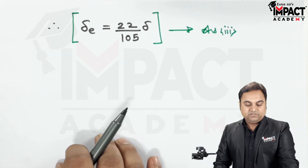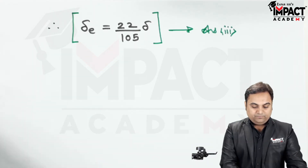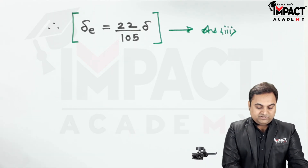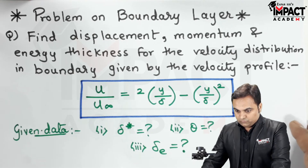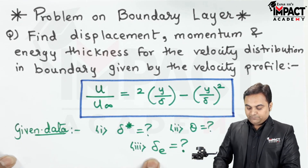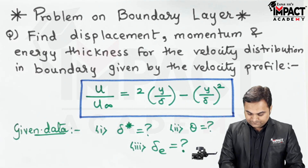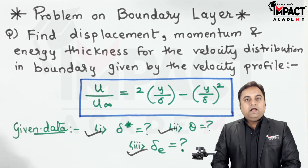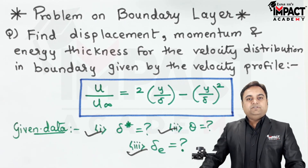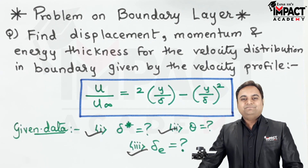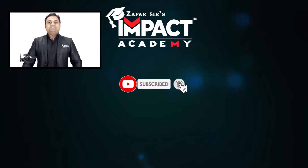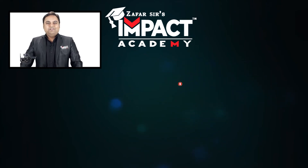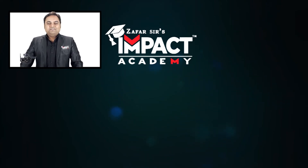That's the third answer. All three questions have been answered: displacement thickness is δ/3, momentum thickness is 2δ/15, and energy thickness is 22δ/105. The problem is now complete. If you find my videos helpful, please like, share, comment, and subscribe. Thanks for watching.